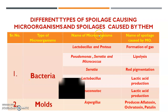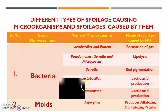Next are spoilage-causing microorganisms. Bacteria such as Lactobacillus cause spoilage through gas formation. Pseudomonas, Serratia, and Micrococcus cause lipolysis of foods. Serratia causes red pigmentation. Lactobacillus causes lactic acid production, and Leuconostoc also causes lactic acid production.